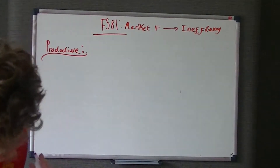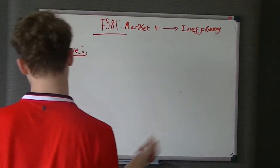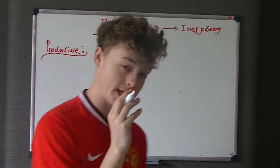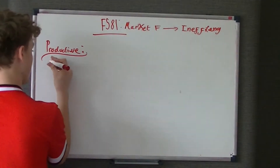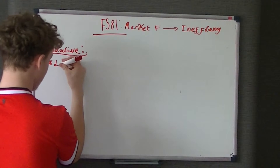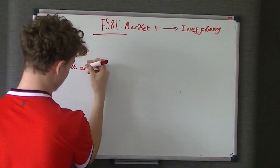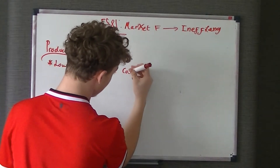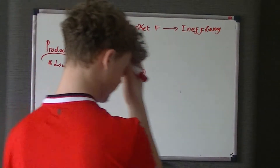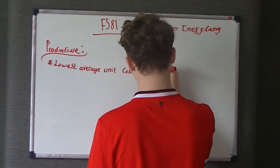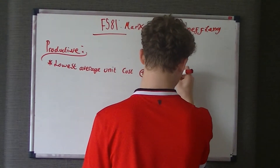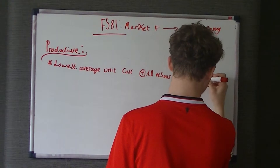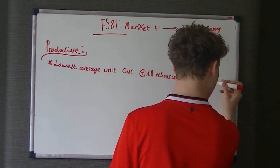The bare bones of productive efficiency is about the lowest unit cost and the resources being fully employed. What the examiners look for when you're defining productive efficiency is the lowest average unit cost, plus all resources are fully employed and utilized.